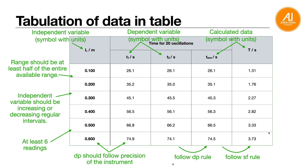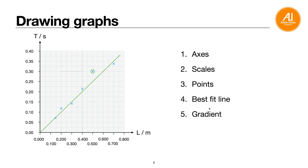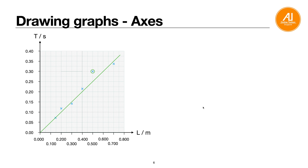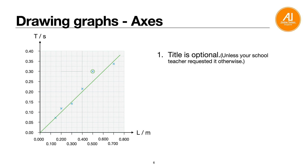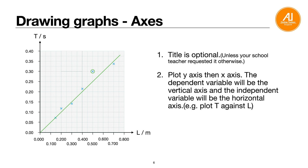When drawing graphs, there are five main points: axes, scale, points, best-fit line, and gradient. For axes, a title is optional unless your teacher requests it. Plot the dependent variable on the y-axis (vertical) and the independent variable on the x-axis (horizontal). For example, if the question says 'plot T against L,' whatever is mentioned first is the y-axis. Always label your axes with the symbol and official SI units.